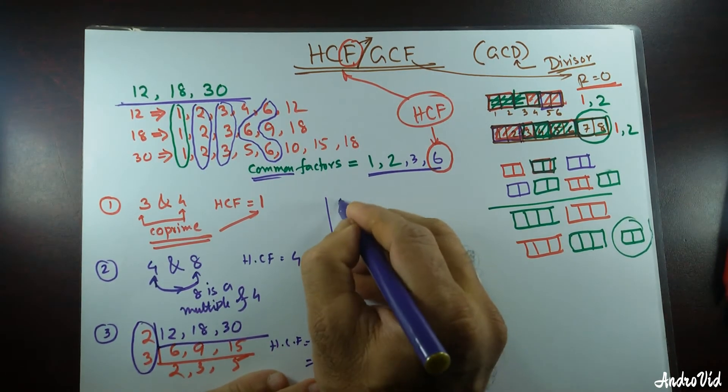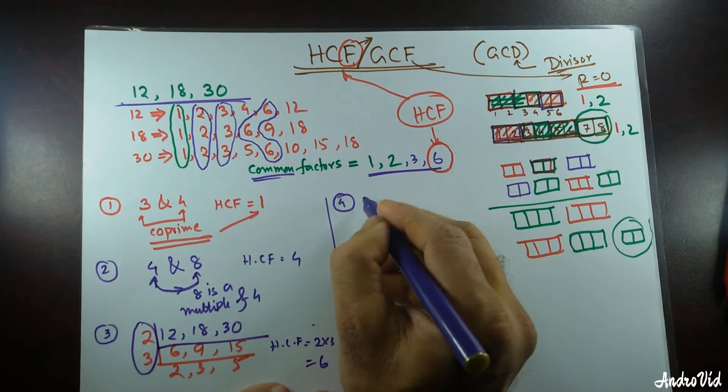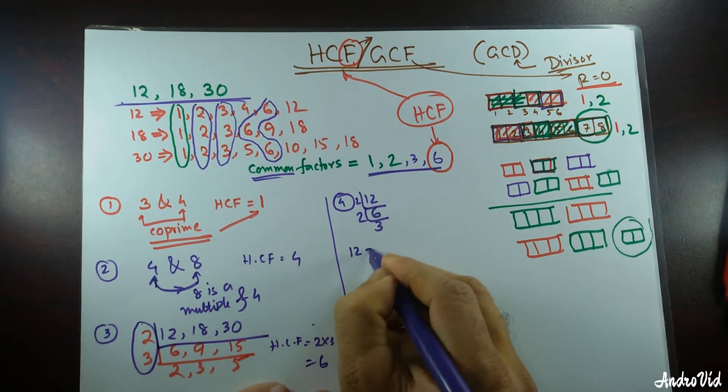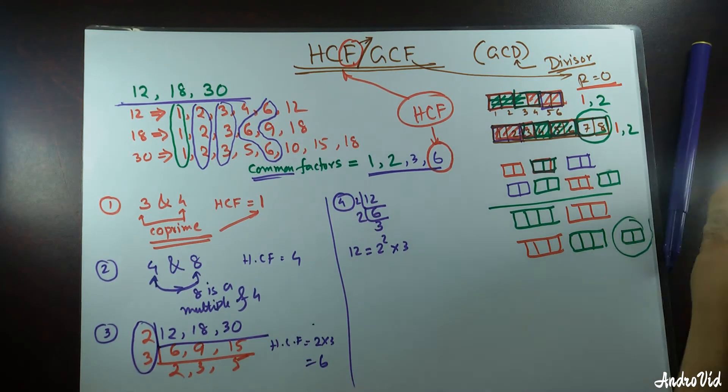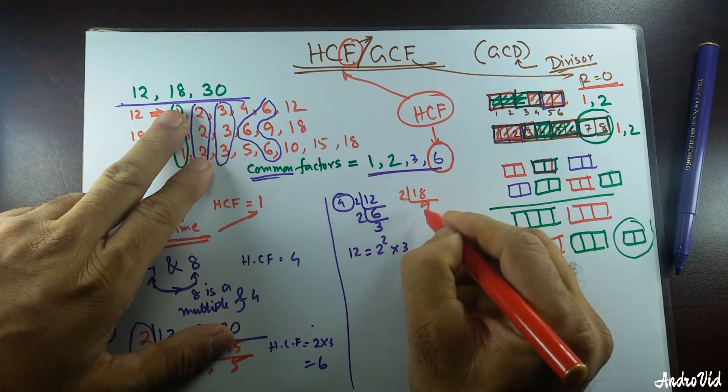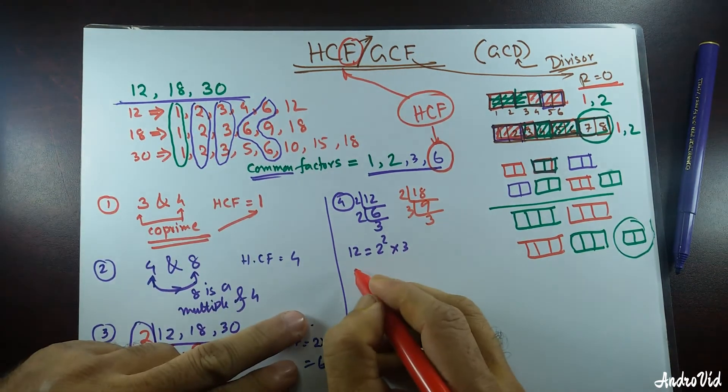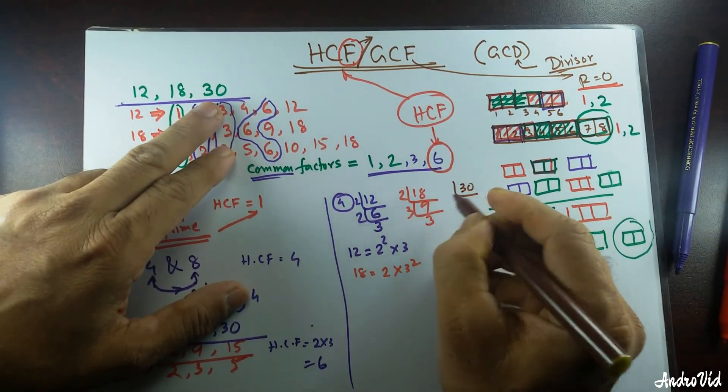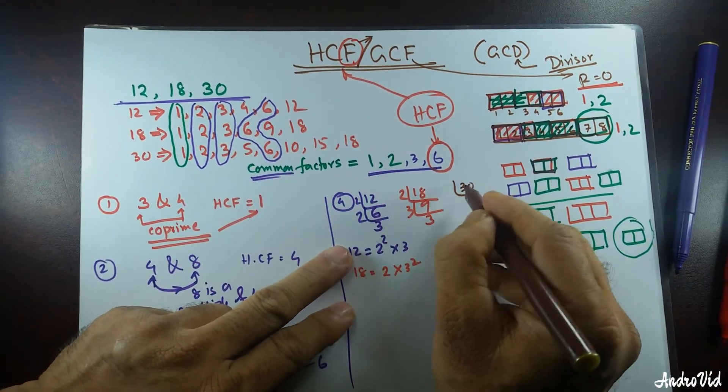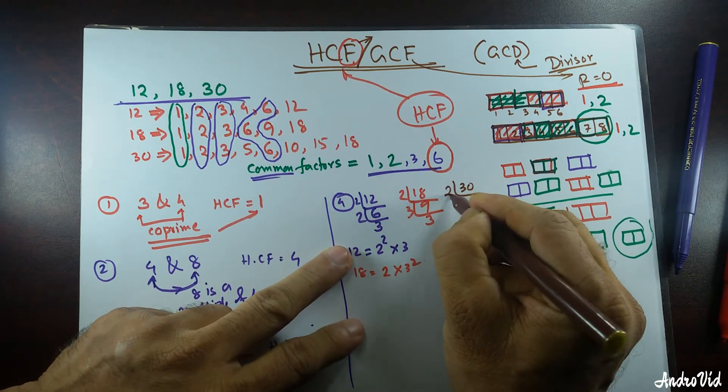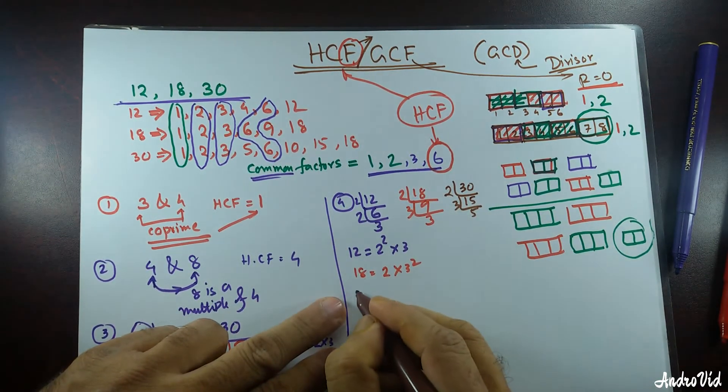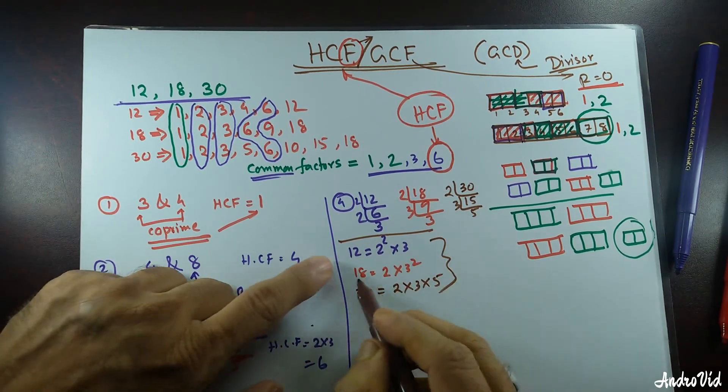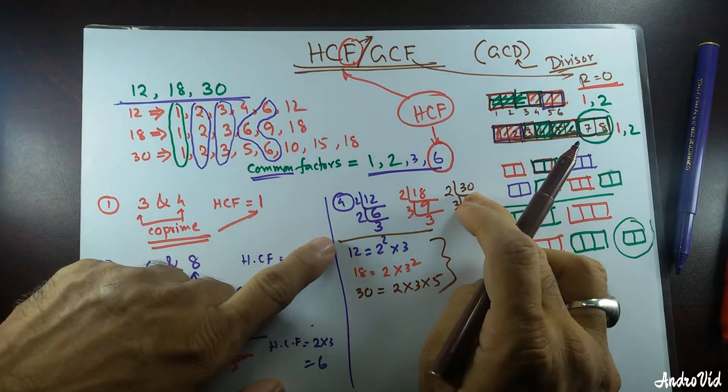Another way to do this is the prime factorization. 12, if I divide it by 2, then 2 times 6 is 12, then 2 times 3 is 6, so 12 can be written as 2 squared times 3. And then, I have 18 divided by 2, so 18 can be written as 2 times 3 squared. And then, let's come to 30. It divides by 2, 2 times 15 is 30, 3 times 5. So 30 can be written as 2 times 3 times 5.